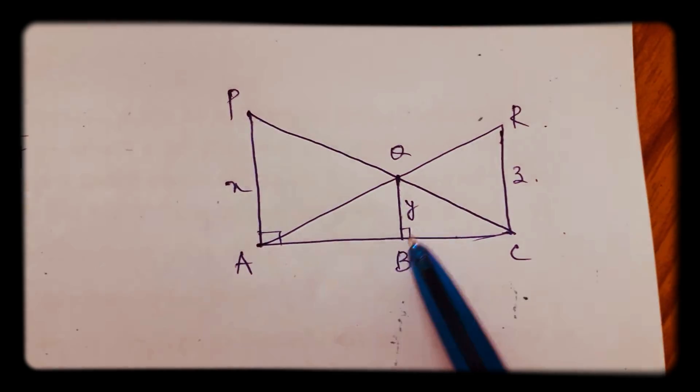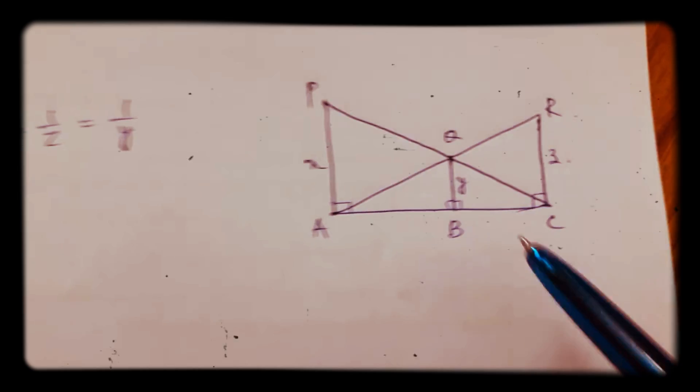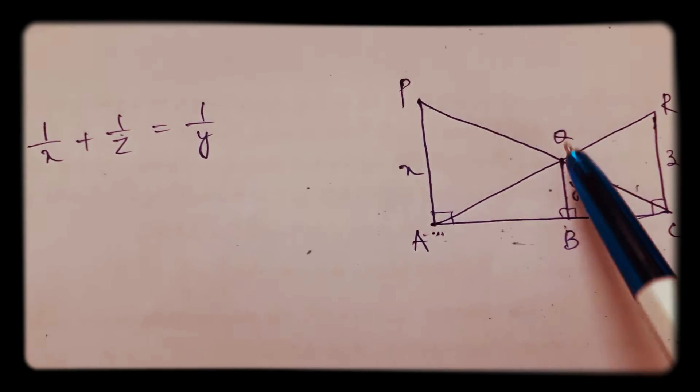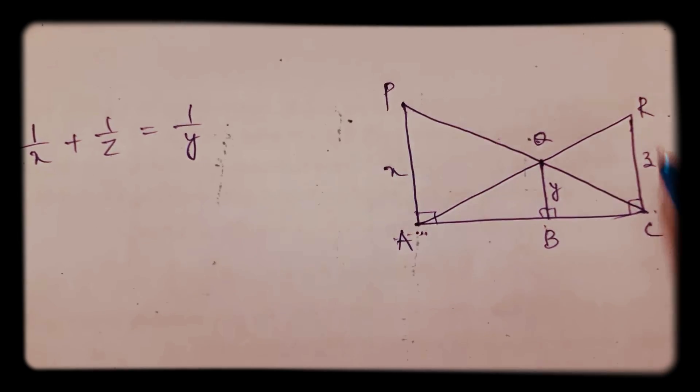Here all these are perpendicular. To prove, start from here. Take these triangles: ABQ and ACR.